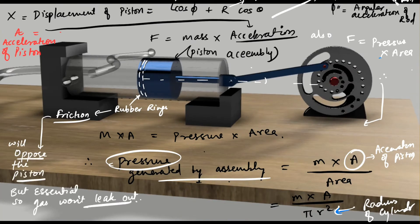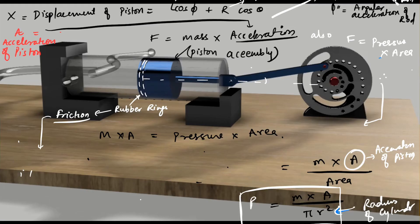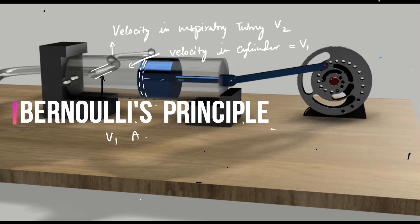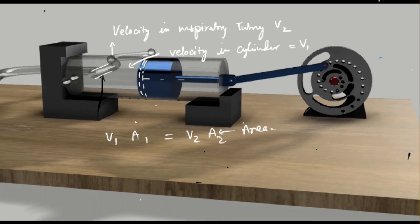One more variable which would be needed to be taken into account is friction, which will be caused by the rubber rings on the grooves of the piston head. This friction will be an opposing force to the movement of the piston. The velocity of air inside the inspiratory tubing will be different than the velocity of air inside the air cylinder. By using the Bernoulli principle, we can calculate the velocity inside the inspiratory tubing if we know the velocity of air inside the air cylinder, because the volume of air would remain the same.